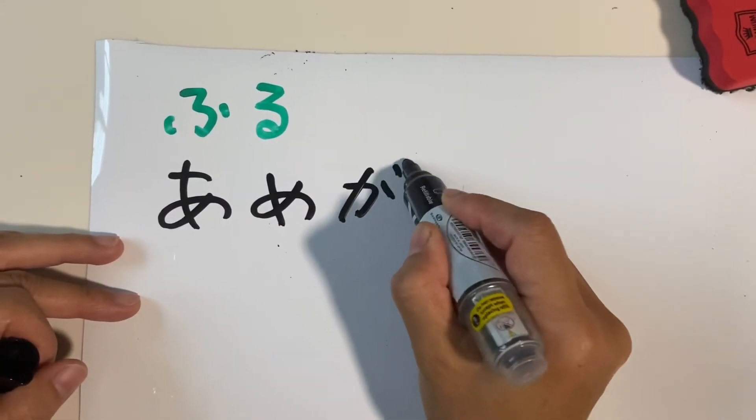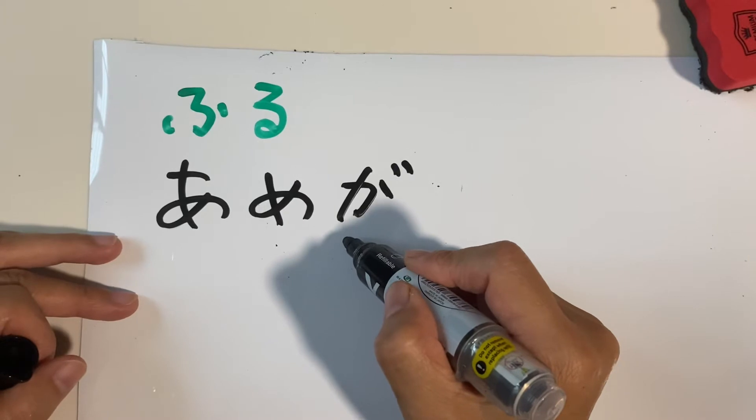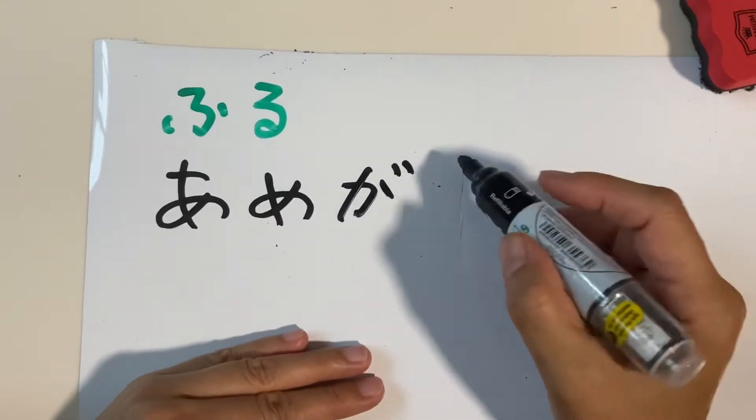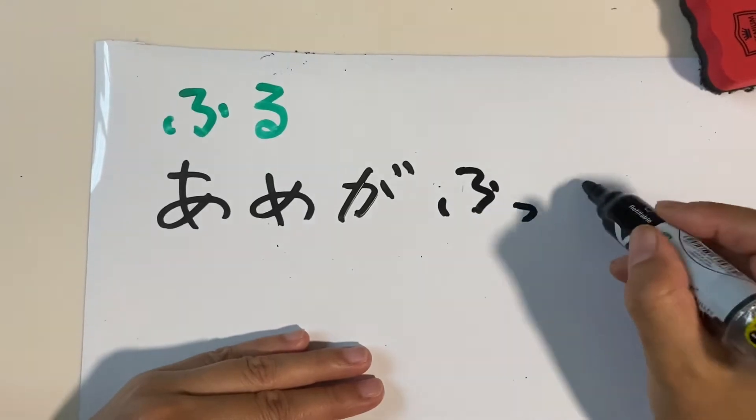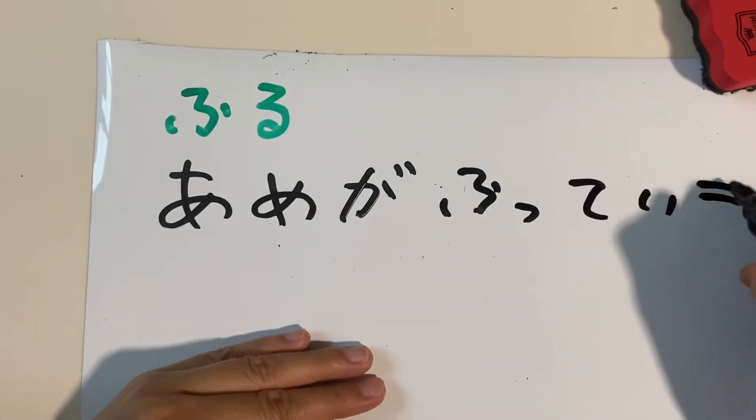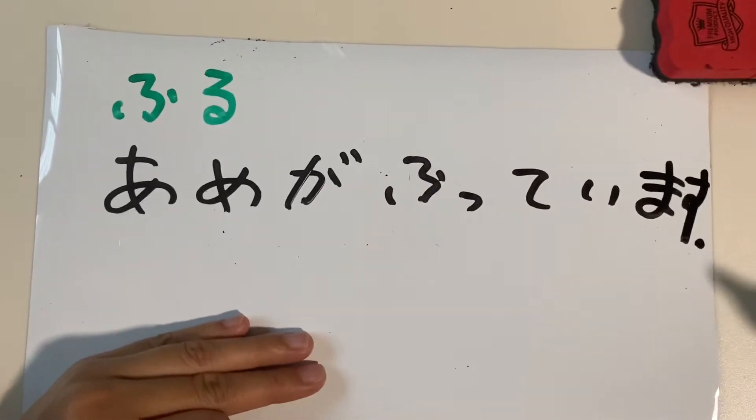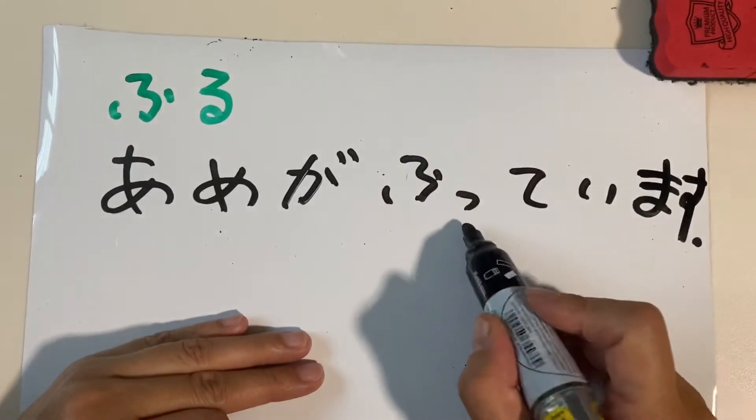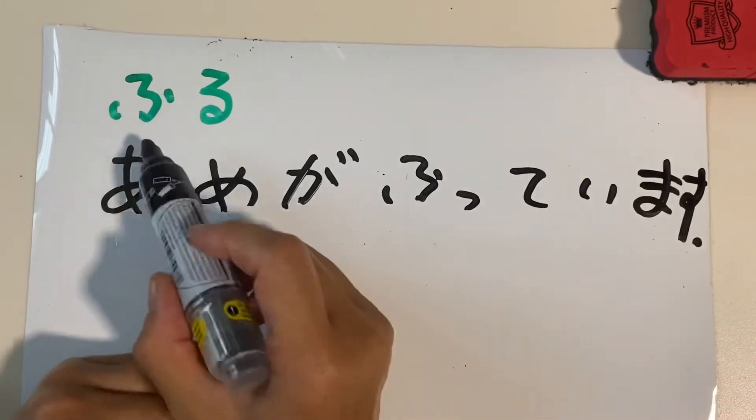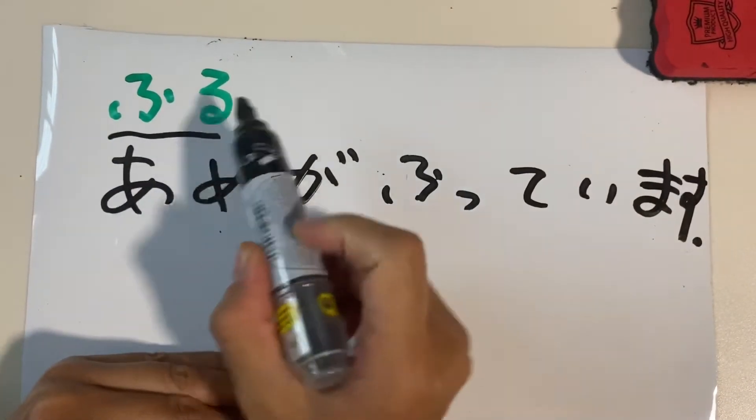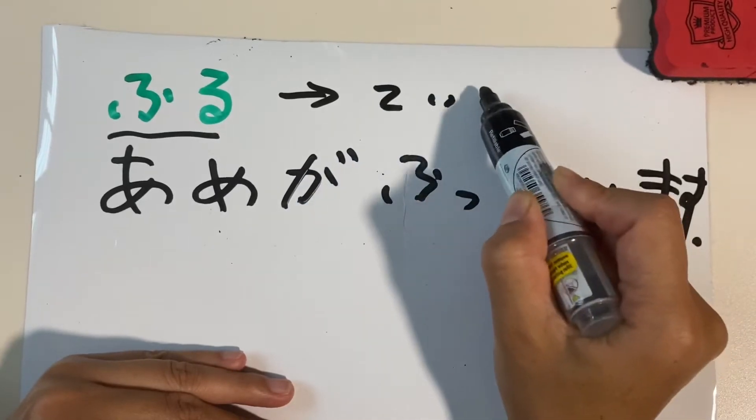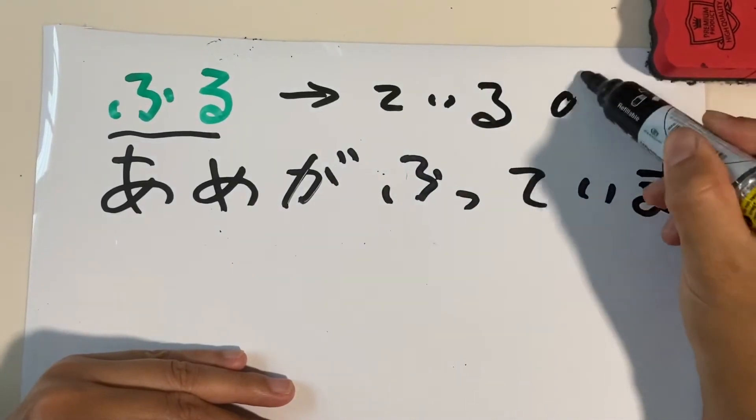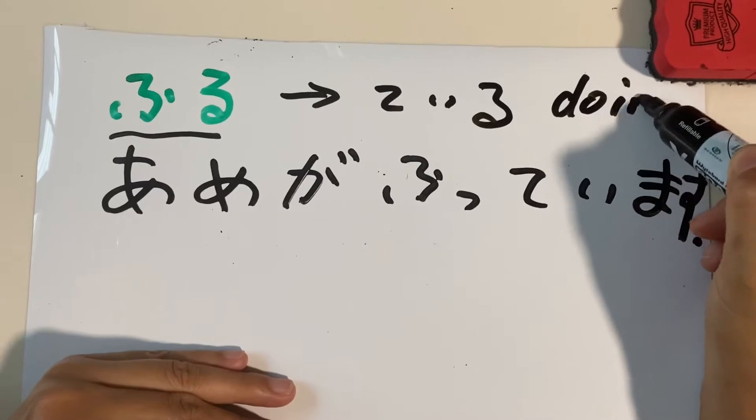For example, ame ga. Ga is our particle. Ame ga futte masu. Ame ga futte masu. Okay, over here we have the verb furu. Furu. Chase to, over here, tei you is like...